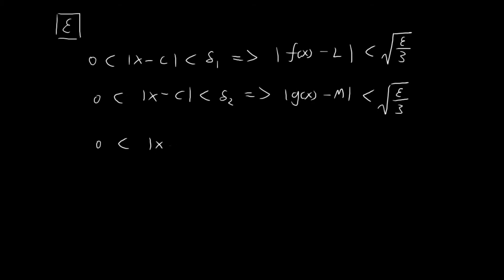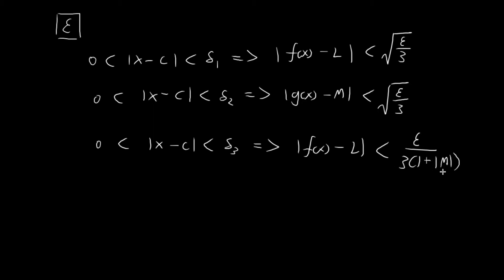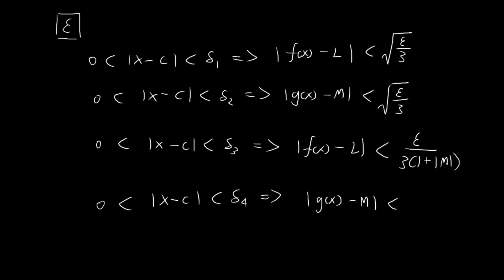We do the same thing again with a slightly different expression. There exists a delta3 such that if |x - c| < delta3, then |f(x) - L| < ε / (3(1 + |M|)). The '1 +' in the denominator prevents division by zero when M = 0. Similarly, there exists a delta4 such that |g(x) - M| < ε / (3(1 + |L|)), with the '1 +' preventing issues when L = 0.